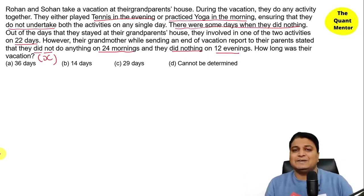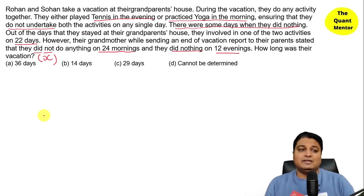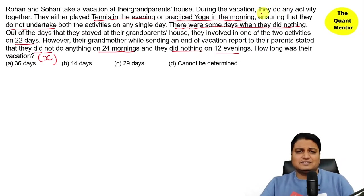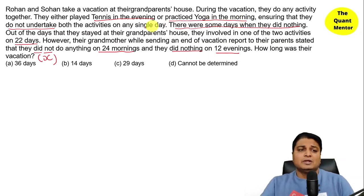Let me explain the question in Hindi. There are two kids — Rohan and Sohan — who went on vacation to their grandparents' home. If they do an activity in the evening, they play tennis. If they do an activity in the morning, they do yoga.